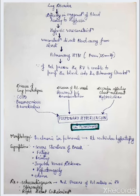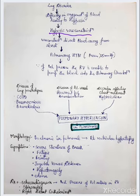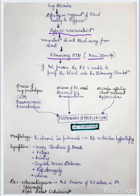So, lung disorder causes difficulty in oxygenation of blood, leading to hypoxia. The main response is hypoxic vasoconstriction, which diverts blood away from the alveoli, leading to pulmonary hypertension with pressure more than 25 mmHg. Because of this increased pressure, the right ventricle is unable to pump blood into the pulmonary circulation.